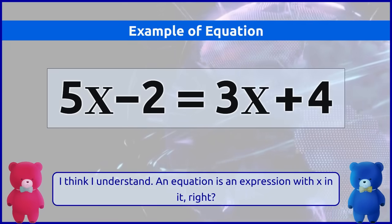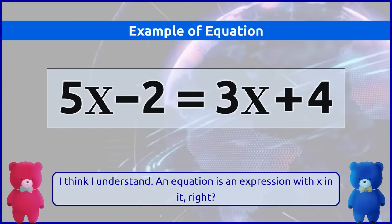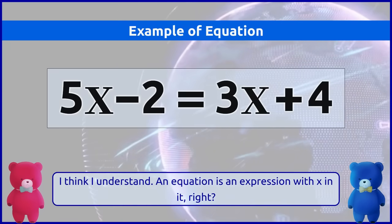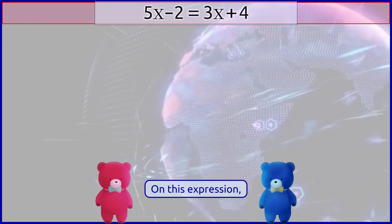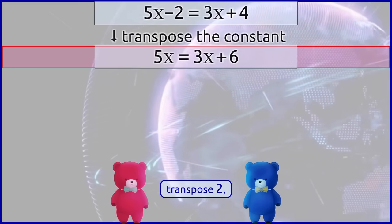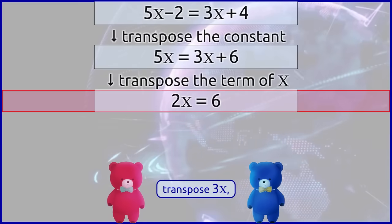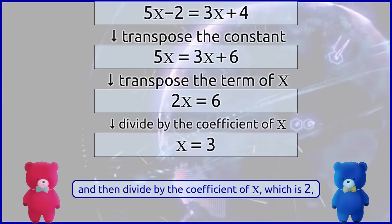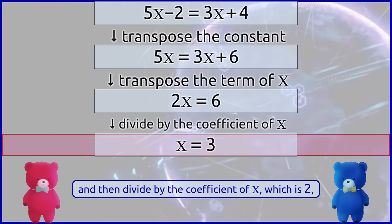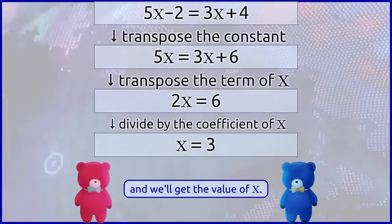I think I understand. An equation is an expression with x in it, right? And this expression, transpose the constant, transpose the term of x, and then divide by the coefficient of x, which is 2, and we'll get the value of x.